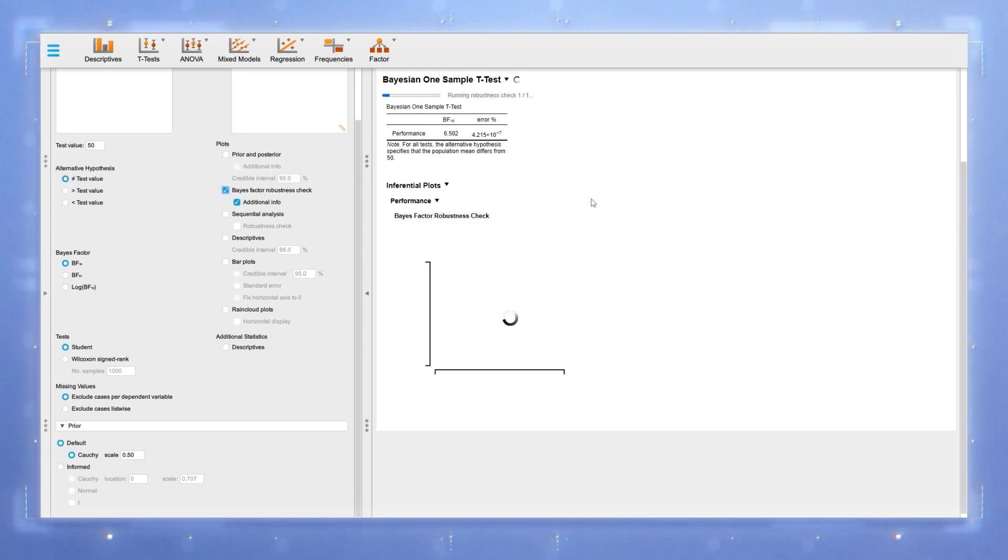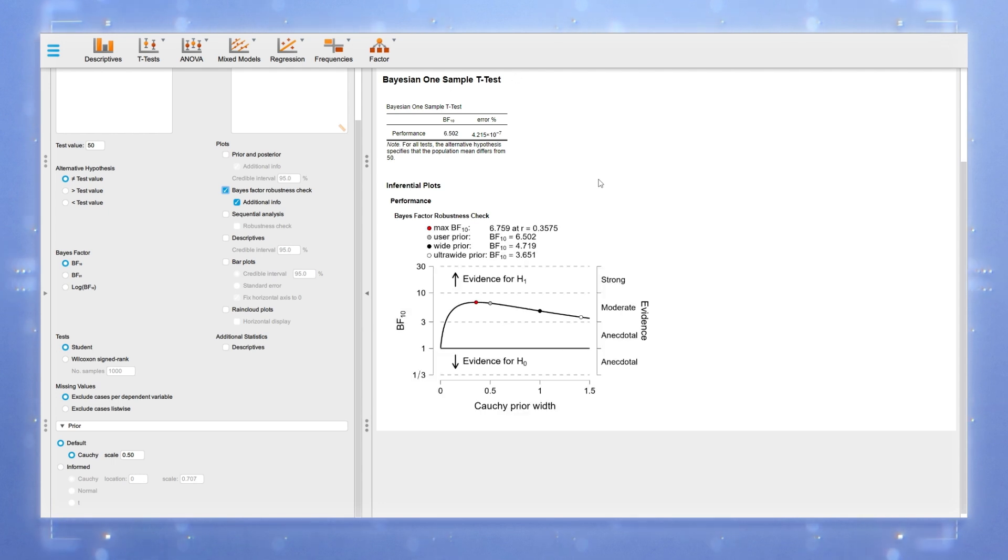In JASP, we can easily obtain robustness check analysis by selecting the corresponding option. The figure plots the Bayes factor values as function of the Cauchy prior width. As you can see, the Bayes factor values we obtain are comprised between 3 and 10 for most of the priors considered in this analysis, so the result is robust.